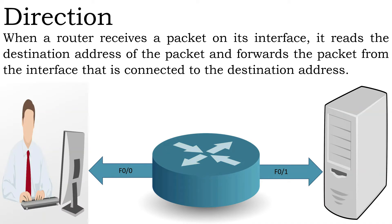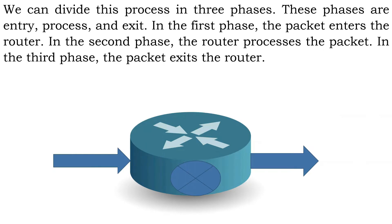Direction. When a router receives a packet on its interface, it reads the destination address of the packet and forwards the packet from the interface that is connected to the destination address. We can divide this process into three phases: entry, process, and exit.